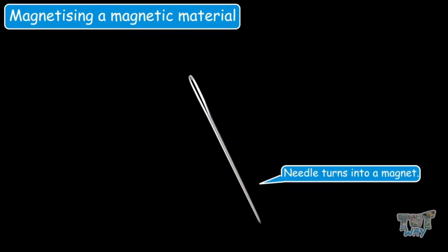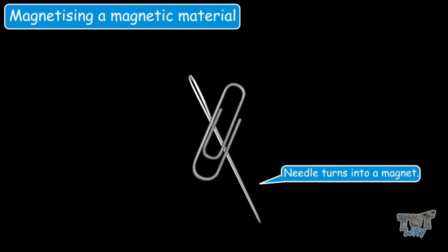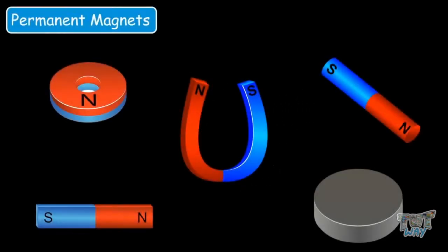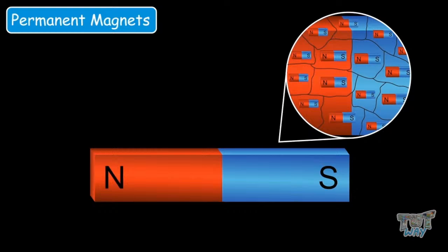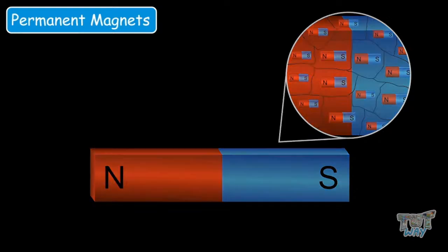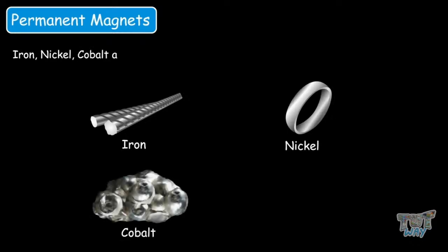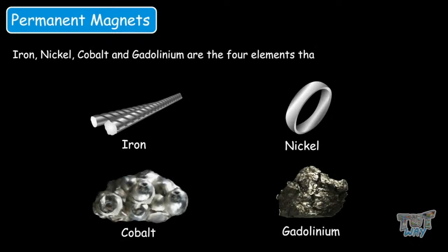Now this needle will also attract magnetic materials. Permanent magnets are nothing more than a magnetic material in which all domains stay aligned in the same direction. Iron, nickel, cobalt and gadolinium are four elements that are always permanently magnetic at room temperature — meaning they can be permanently magnetized and turned into permanent magnets.